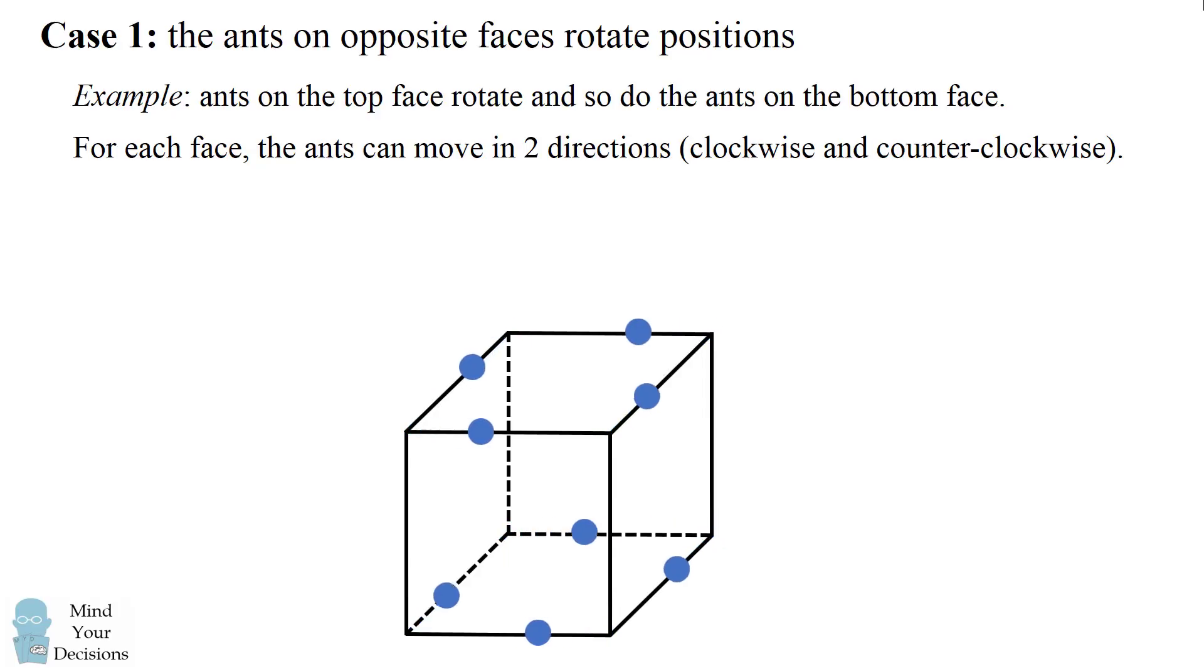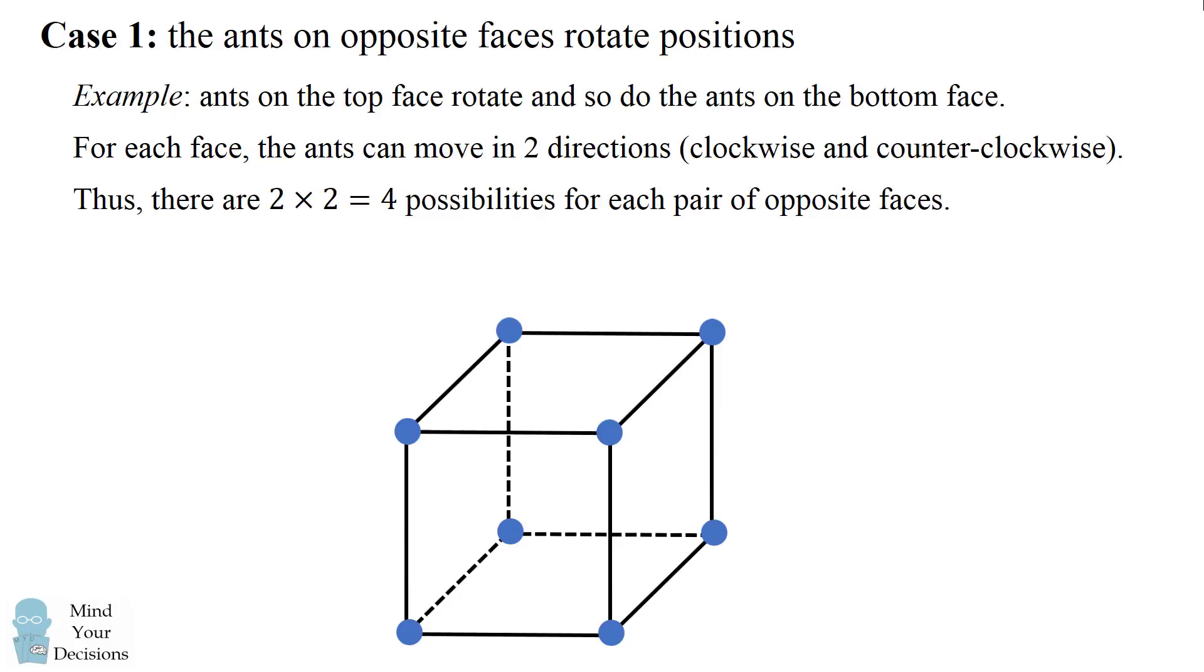Here's another way that the ants could move in which they would not collide. Here's another way, and there will also be one more fourth way that the ants on the top and bottom faces will not collide. In total the ants on each face can move either clockwise or counterclockwise and there are two faces, so that means two times two which equals four possibilities for each pair of opposite faces.